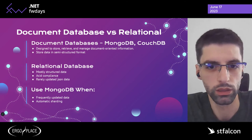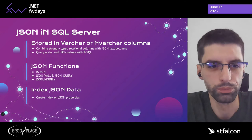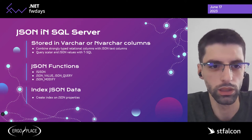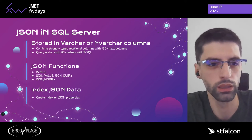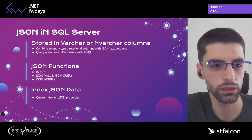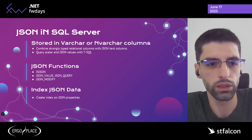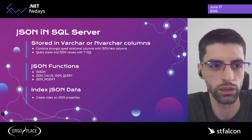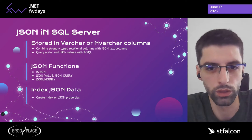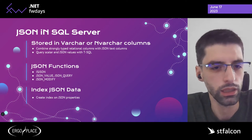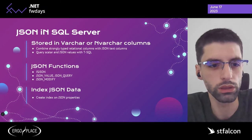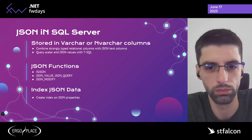In SQL Server, there is no special JSON type — JSON is stored in varchar columns like any other textual data. However, there are JSON functions available from T-SQL and from Entity Framework that help us query and update JSON data. SQL Server also supports indexing JSON columns to speed up queries. The common JSON functions are: IS_JSON, which checks if a string is valid JSON and is frequently used to create a check constraint; JSON_VALUE for extracting a single value; JSON_QUERY for extracting an array or object; and JSON_MODIFY for updating JSON data.